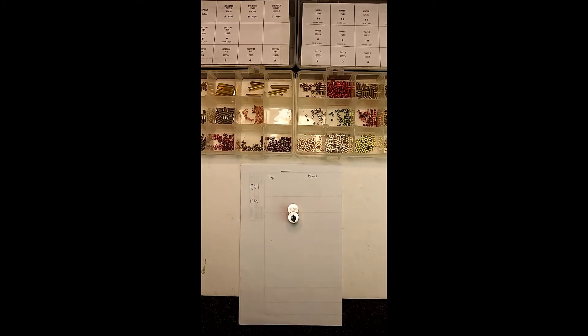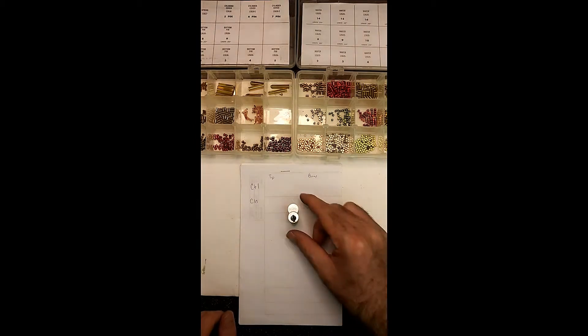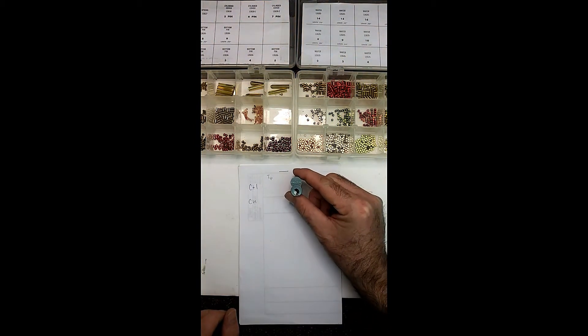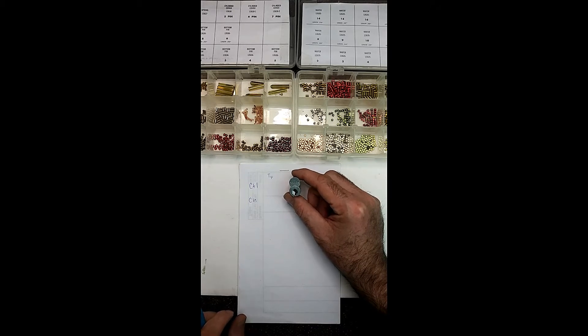Good afternoon, LockDoc coming back to you here. Today I'm going to take this opportunity to show how you key small format interchangeable core. Small format means that it's probably made by either Falcon, Arrow, or Best.